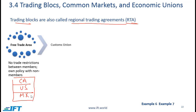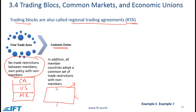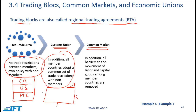The next level of integration is a customs union, where member countries also adopt a common set of trade restrictions with non-members. Beyond that is a common market, where all barriers to the movement of labor and capital goods among member countries are removed — meaning labor and capital can move freely between all members.